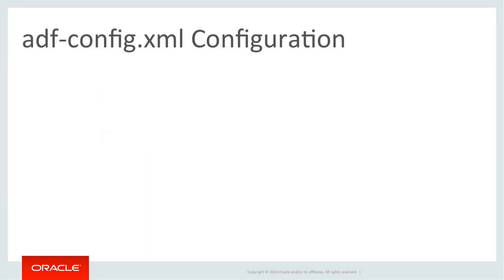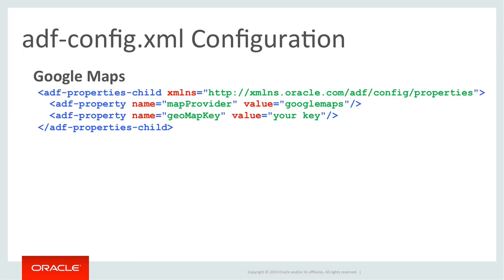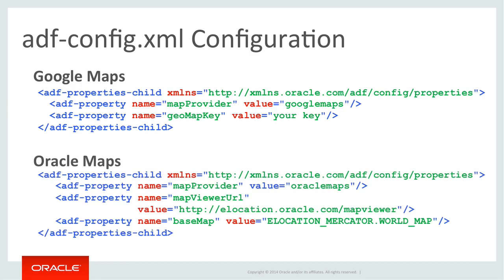Before using the geographic map component, depending on if you intend to use Google Maps or Oracle Maps, you need to add relevant configuration entries to the map application adfconfig.xml file found in the Application Navigator's Application Resources panel. In order to use either mapping solution in a production environment, you need the appropriate licenses from Google or Oracle. For development purposes, it's generally fine to use the services without the licenses or keys, but it's up to you to ensure you've obtained the correct licenses and are compliant with the licensing conditions from both vendors. Note: if you don't configure either of these entries, the geographic map component reverts to using Google Maps, which is most customers' preference anyway, and this is okay for development purposes.